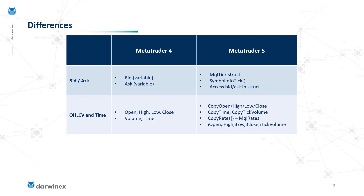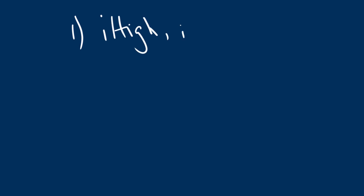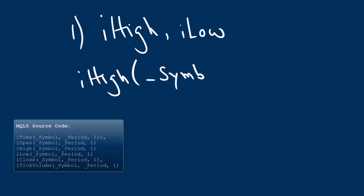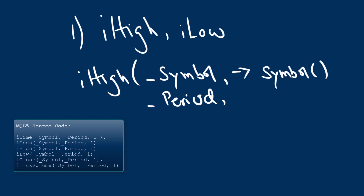For option one, using the i-functions such as iHigh, iLow, etc., the arguments are fairly simple. You provide the symbol — that's _Symbol in MQL5, though you can also use the MQL4 convention of Symbol() — then _Period, followed by the index of the price you're looking for. For example, to find the high of the last completed bar, you would enter index one.